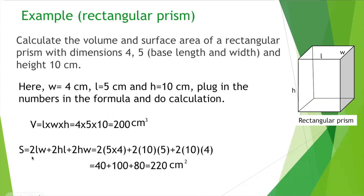Using S equals 2LW plus 2HL plus 2HW: plugging in, 2 times 5 times 4, plus 2 times 10 times 5, plus 2 times 10 times 4. That gives 40 plus 100 plus 80, which equals 220 cm squared.